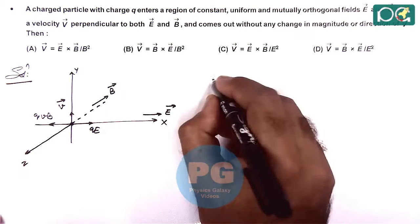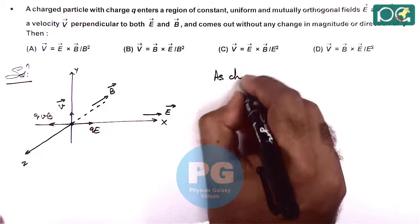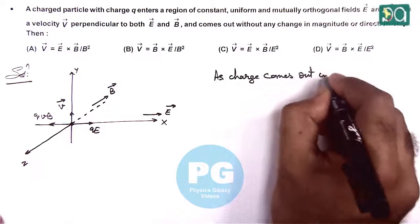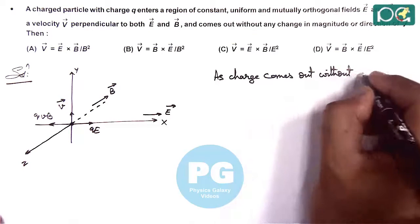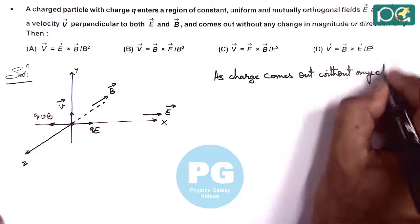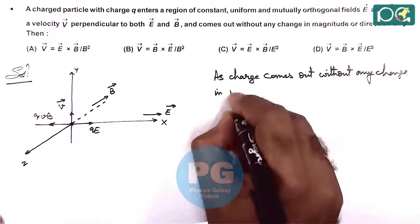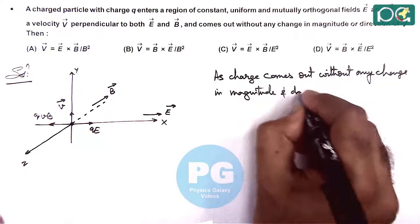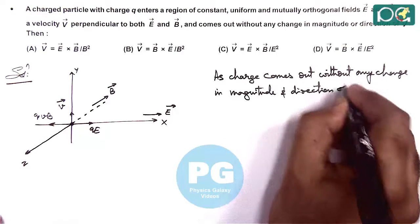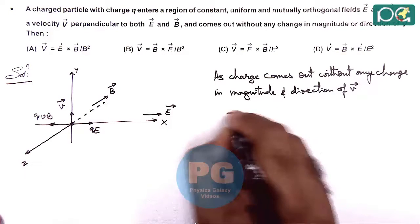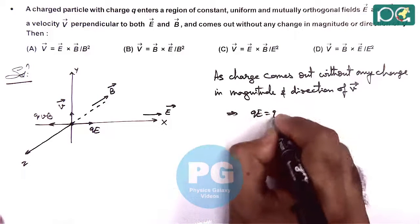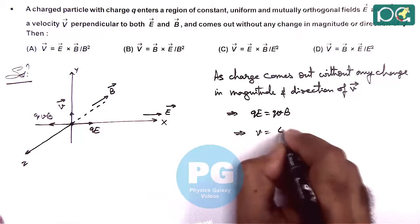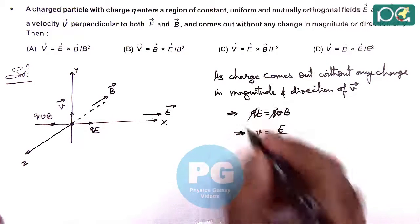So we can say as the charge comes out without any change in magnitude and direction of V vector, this implies here the electric force is balancing the magnetic force, so it gives us the velocity magnitude as E by B, as Q gets cancelled out.